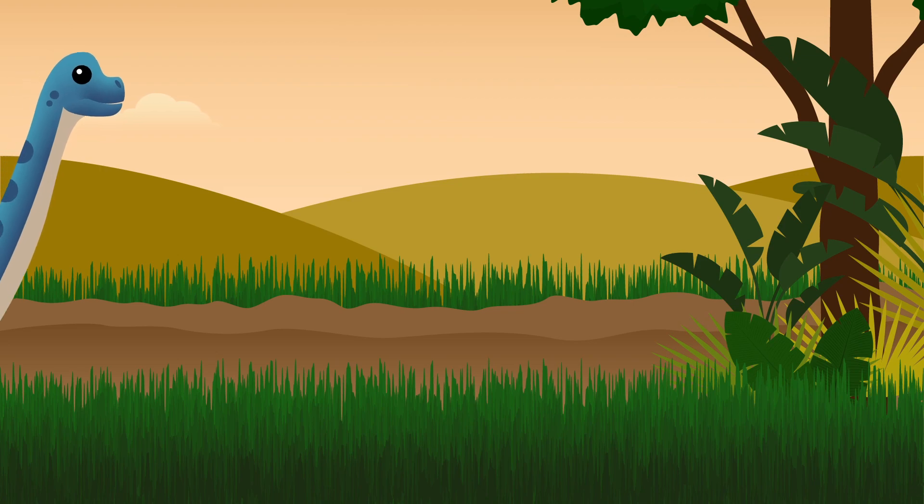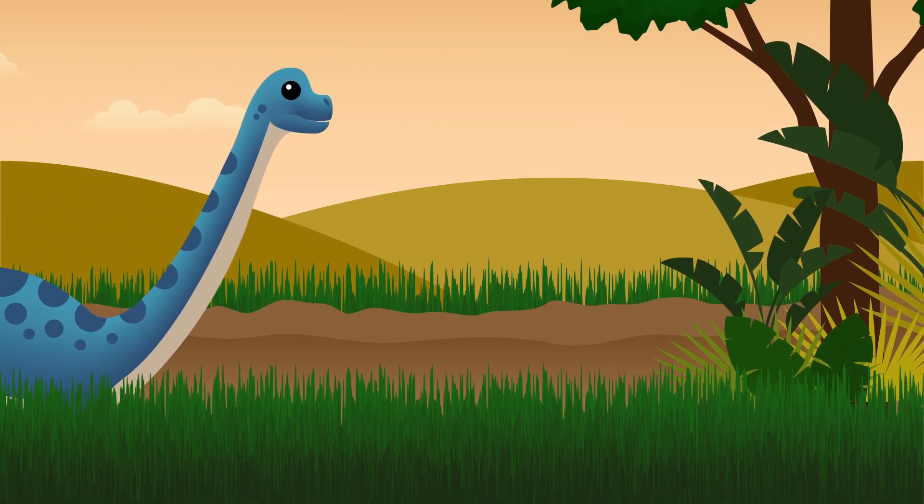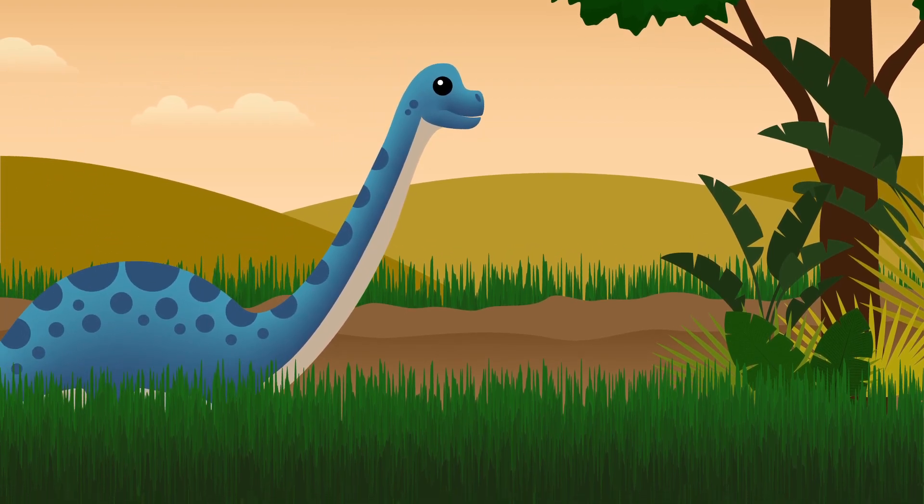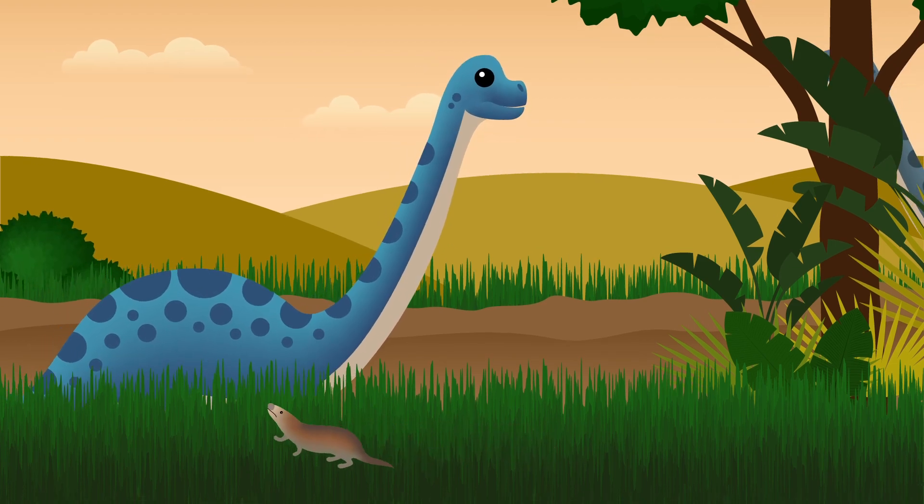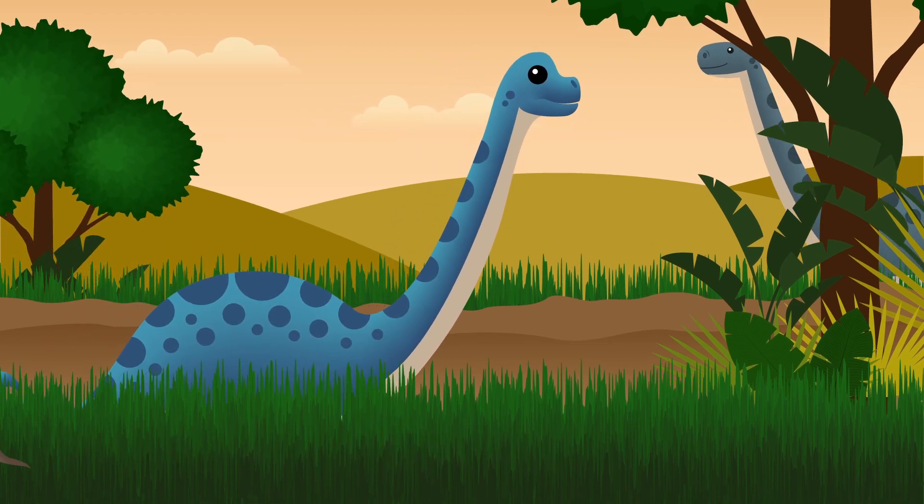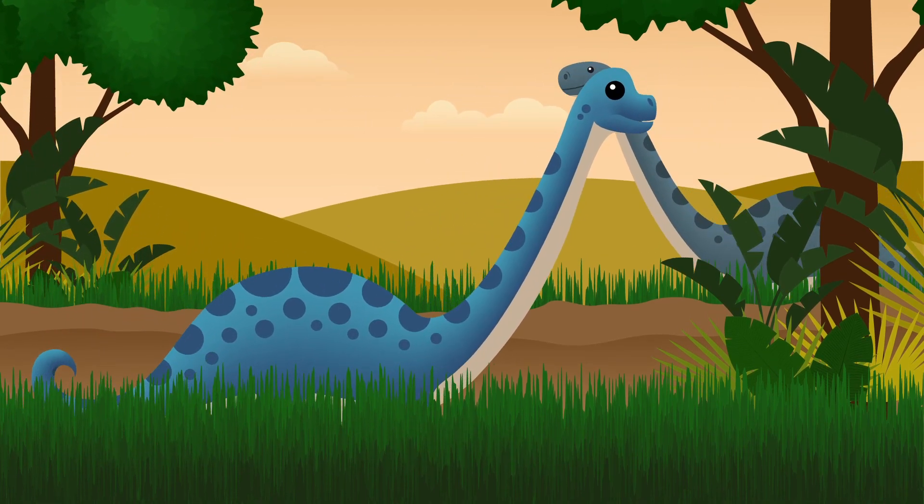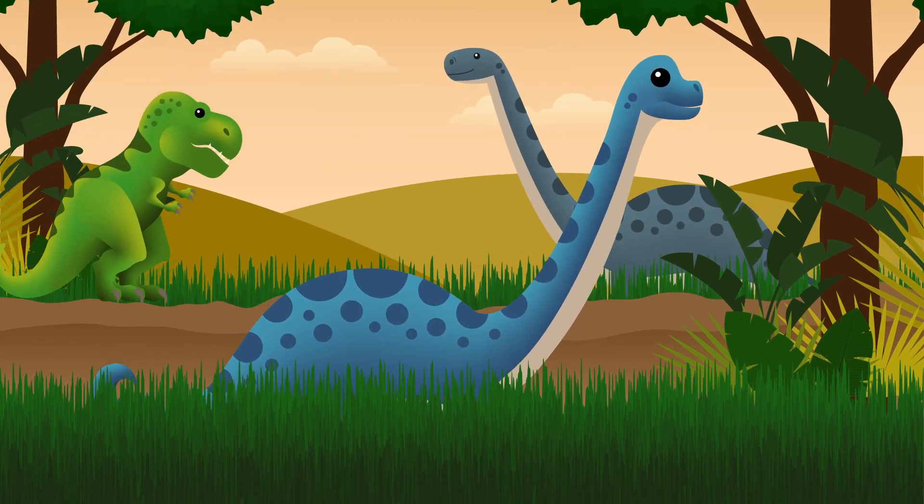During the time of Pangea, the first dinosaurs appeared around 230 million years ago, and even the earliest mammals around 210 million years ago. Creatures grew and thrived in this land, with a vastly diverse biodiversity forming during this long period.